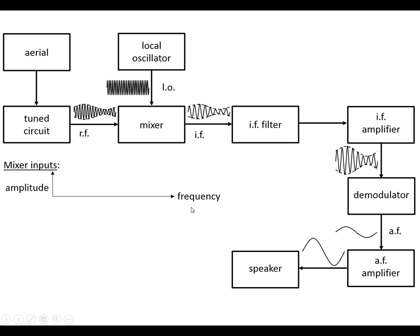Looking at amplitude-frequency graphs for various points of this — looking at the mixer inputs, what we put in is the radio frequency. I've represented these by having the carrier wave with the sidebands for three radio stations. This is the one that we want and we've got the two neighbouring ones here. We've also got the local oscillator frequency, which is 455 kilohertz — the intermediate frequency — above where we're tuning the tuned circuit to.